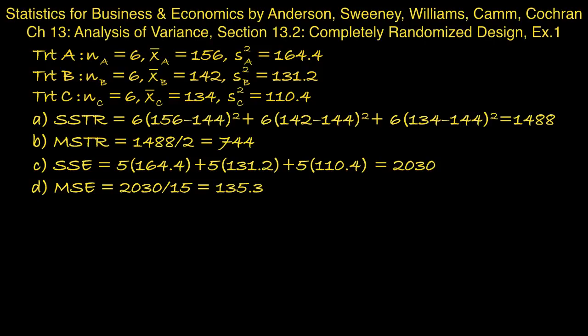Part E asks us to set up the ANOVA table for this problem. And essentially what we are doing by setting that ANOVA table up is calculating the F-statistic. So to save space I'm just going to write down the F-statistic. And we just divide the mean square for treatment by the mean square for error. And we obtain 5.50 for the F-statistic.